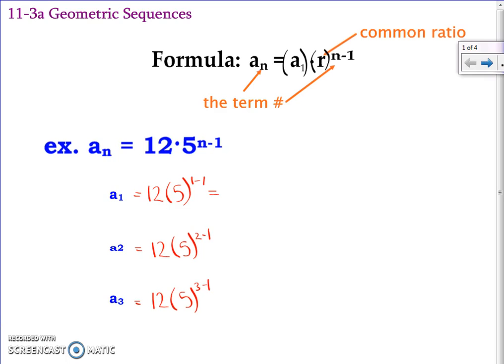1. So 12 times 1 is 12. 2 minus 1 is 1, so 12 times 5 is 60. What's 12 times 25? 300? Somebody double check me. Okay. Questions there?